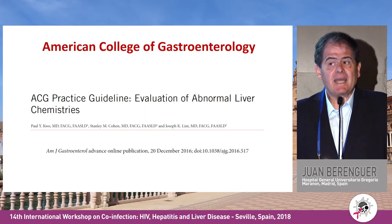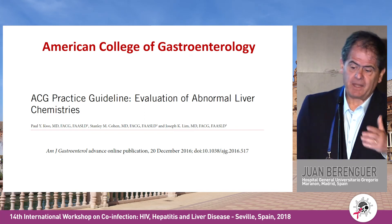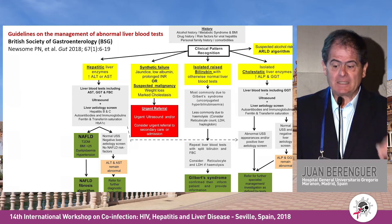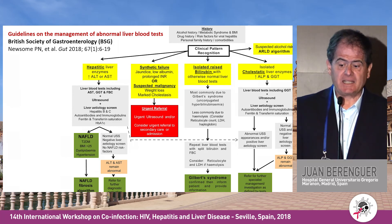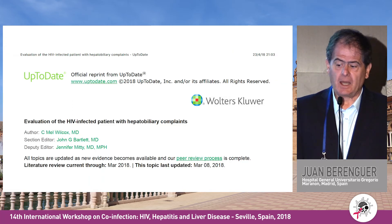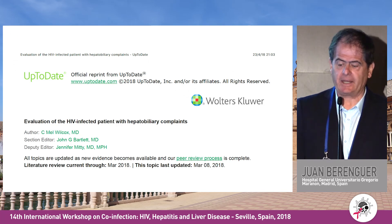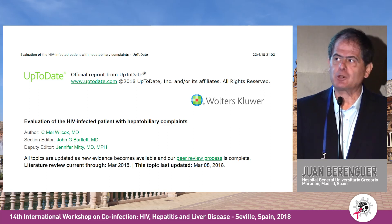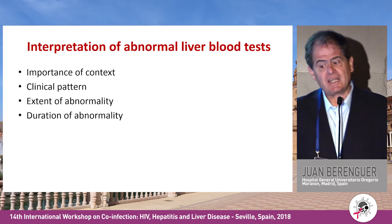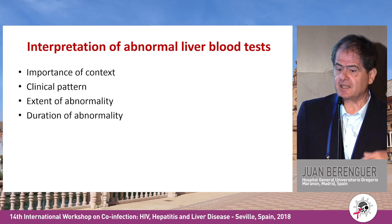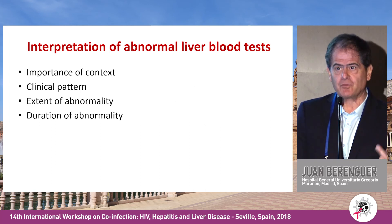There are nice, easy guidelines such as those from the American College of Gastroenterology published two years ago, and also simple guidelines from the British Society of Gastroenterology in GUT this year. In UpToDate, there is also a chapter devoted to evaluation of HIV infection with hepatobiliary complaints. For interpretation, the importance of context, clinical pattern, extent of the abnormality, and duration of abnormality are key.